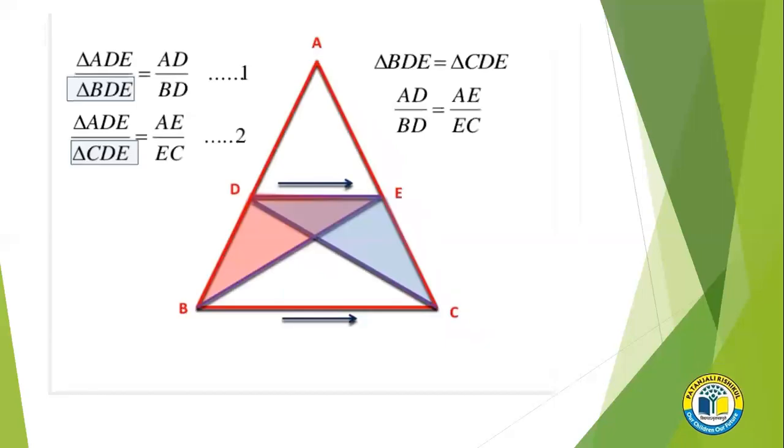Now you can see, the numerator is the same: triangle ADE in both equation 1 and equation 2. Now talking about the denominator, triangle BDE and triangle CDE. If you look at these two triangles, they are on the same base and between the same parallel lines. So the area of triangle BDE and CDE should be the same.